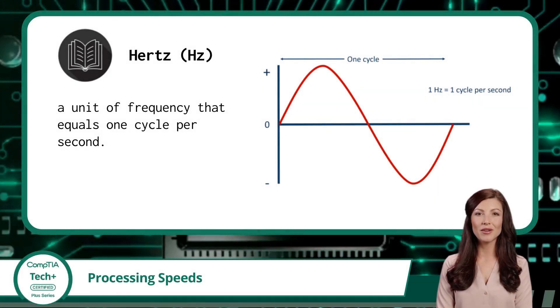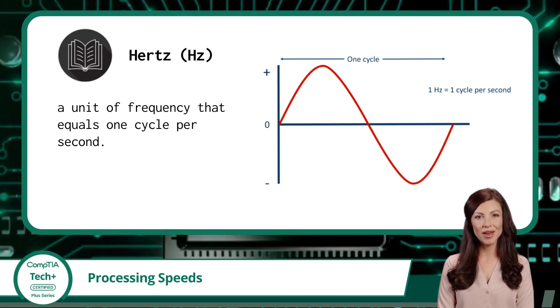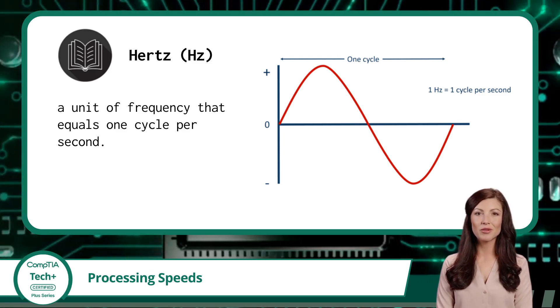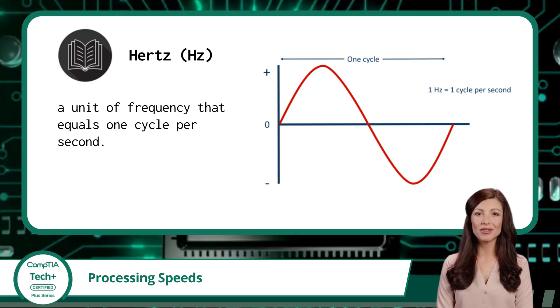A hertz is a unit of frequency that equals one cycle per second. Just one. And at first glance, that might seem incredibly slow, especially when we're talking about high-speed computing. But here's the thing, computers almost never operate at just a single cycle per second.